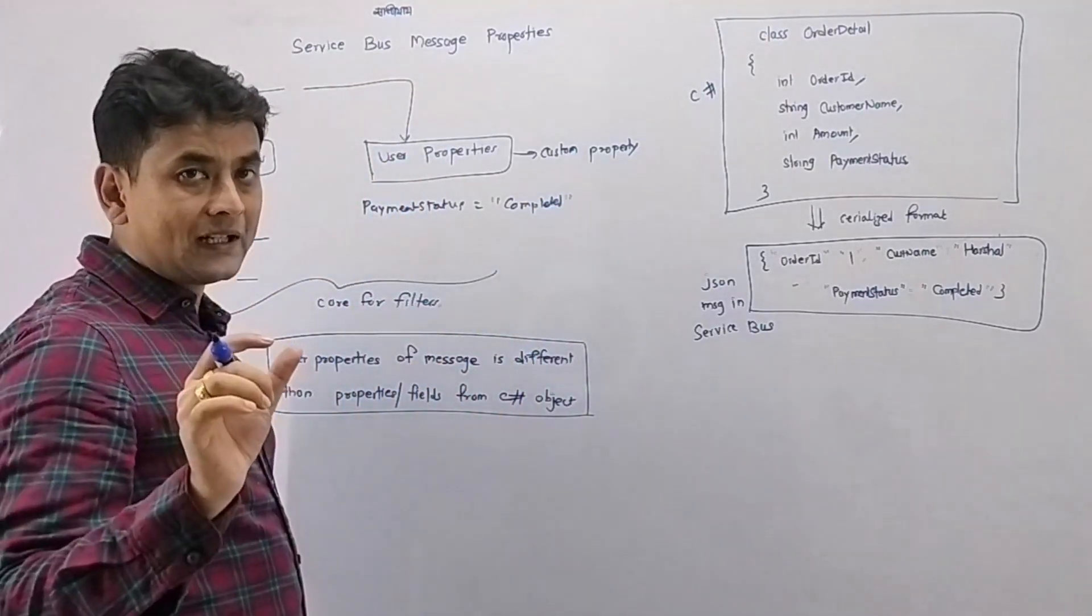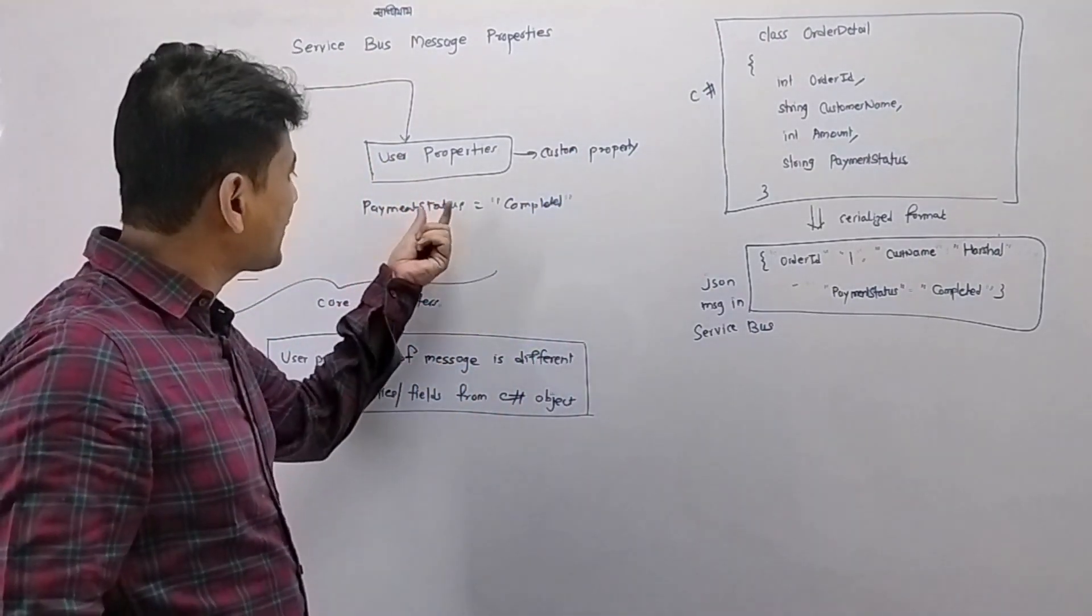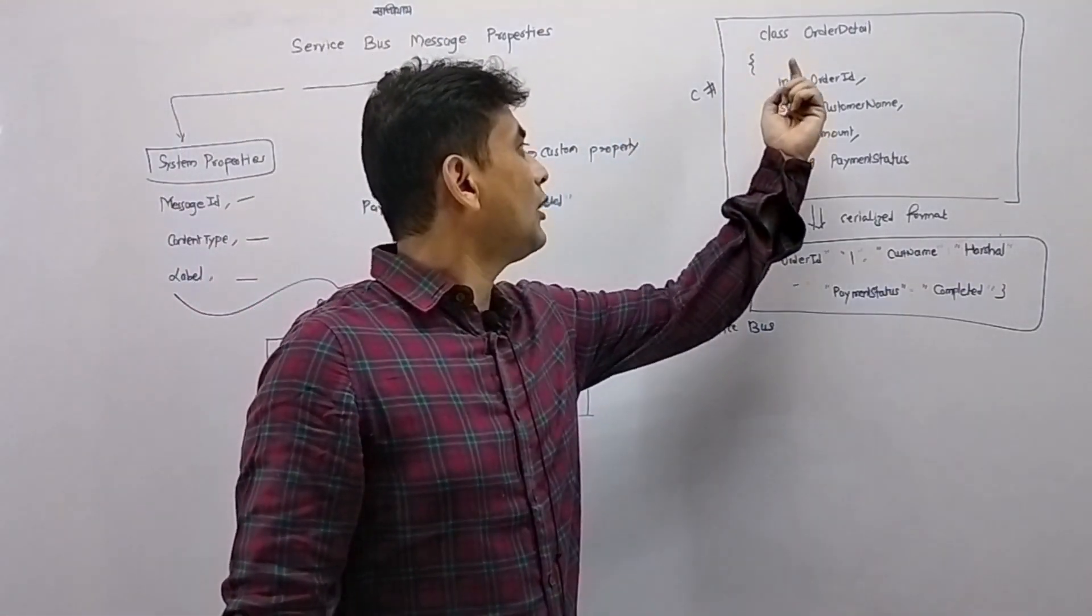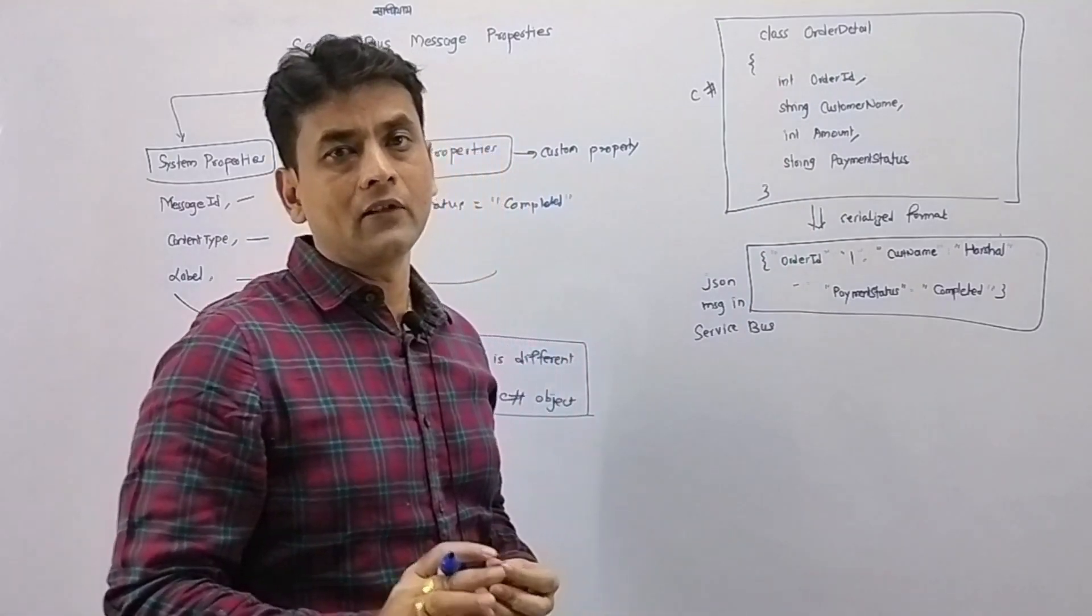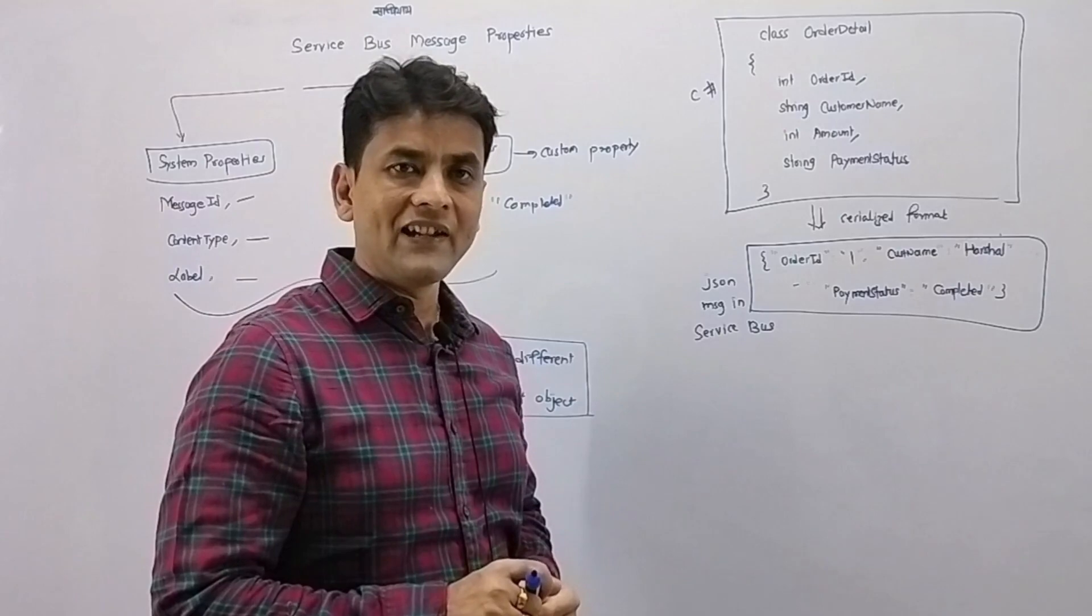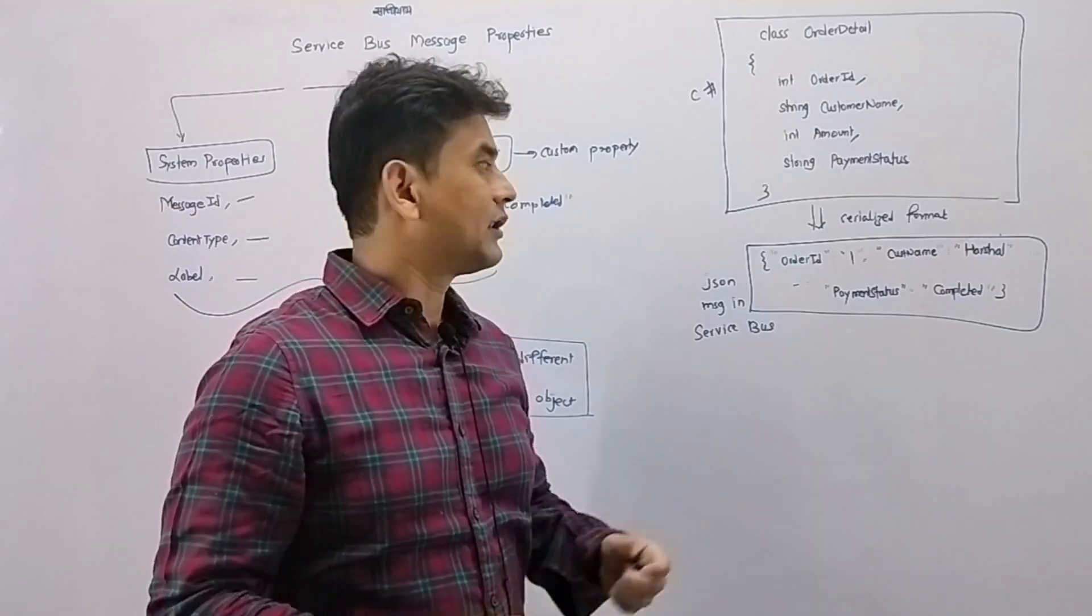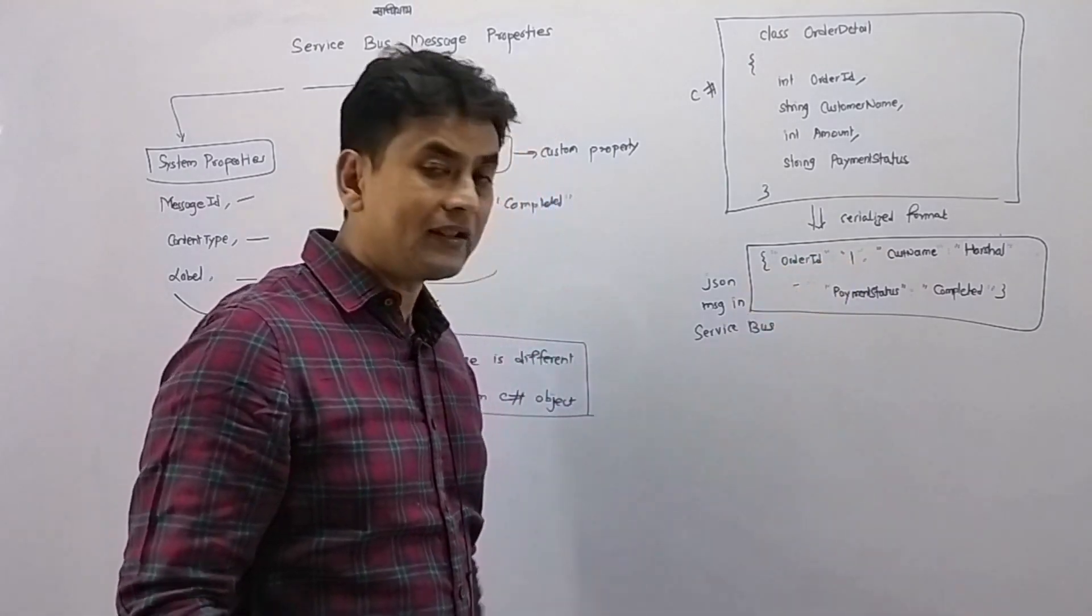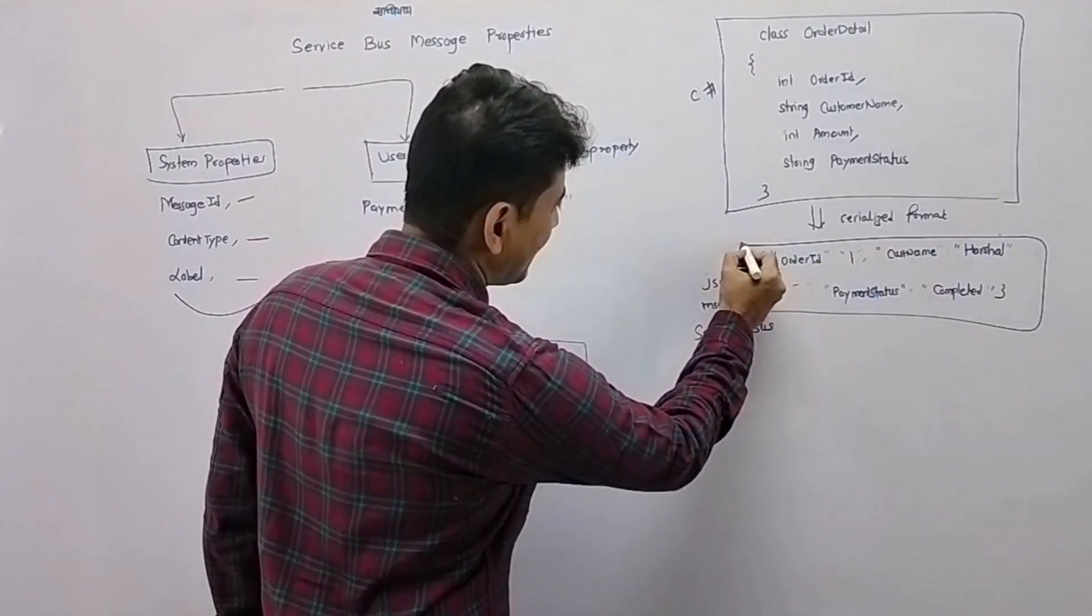Now guys, the property of that message which we have specified is different from the property or field of a C# object. For example, this is a C# object. We can serialize it and send it to service bus. So the format of that message will be something like this - this is the body.